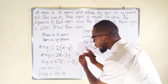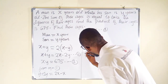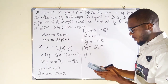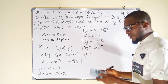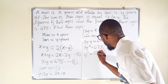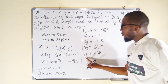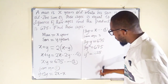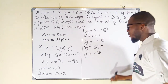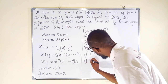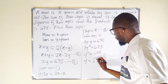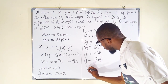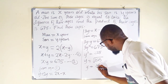To get rid of the coefficient 3, we divide both sides by 3, giving y² = 225. Remember, y represents the son's age, so we take the square root of both sides to eliminate the power of 2. We only consider the positive root because we cannot have a negative age. Therefore, y = 15 years.